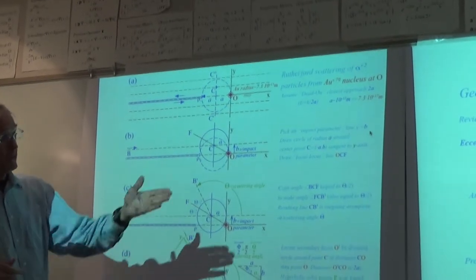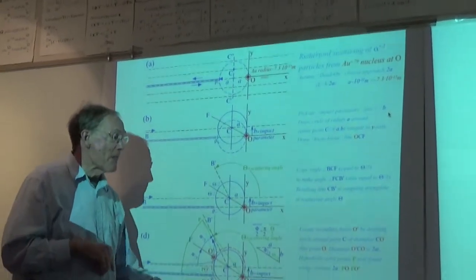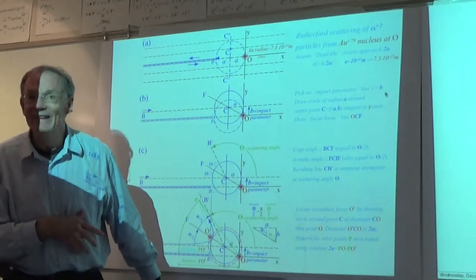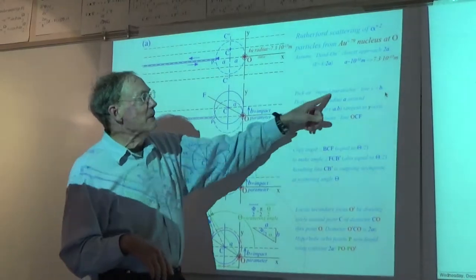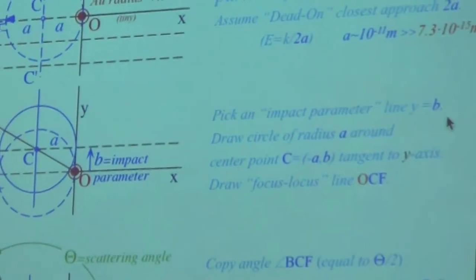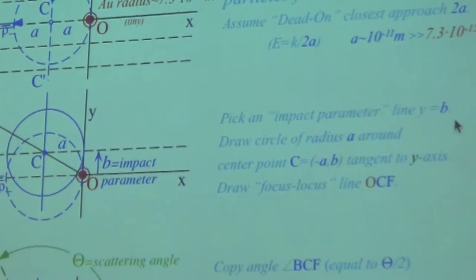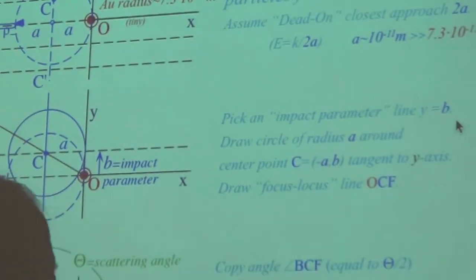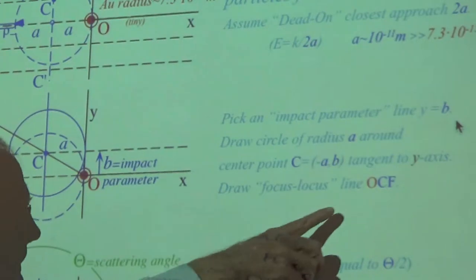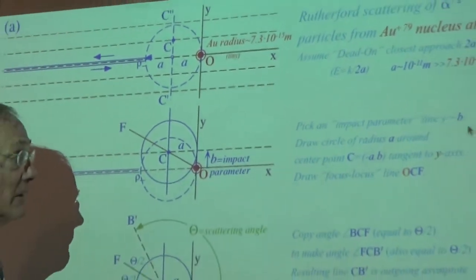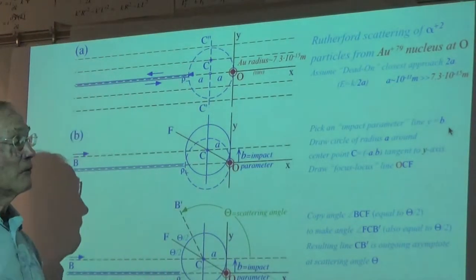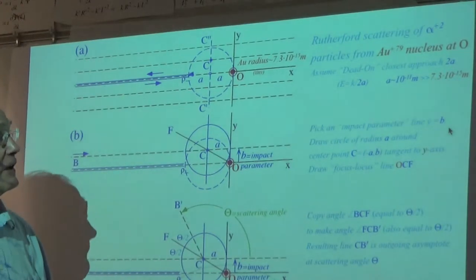The idea is to pick an impact parameter and draw a circle of radius A, moved up to that height. This gives what I call a focus locus - along this line will be the other focus needed to construct the orbit. We know where the force center focus is, but there's this other focus out away from the force center. The next step is to copy the scattering angle, which turns out to be the scattering angle divided by two.